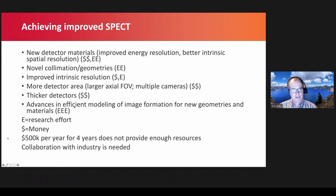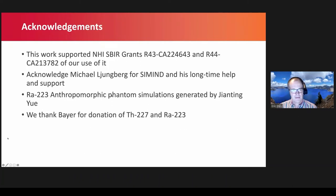Achieving this is going to take money and effort. New detectors require money to buy material and people to work on them. Novel collimation and geometries primarily take work — people to develop reconstruction methods. The R01 mechanism with $500,000 a year for four years, plus budget cuts, isn't enough to provide the resources needed. Finally, there needs to be collaboration with industry, because industry has knowledge and expertise that doesn't exist in academia. I'd like to close by thanking the NIH for supporting our work with various grants and some of the collaborators who've helped with this project.